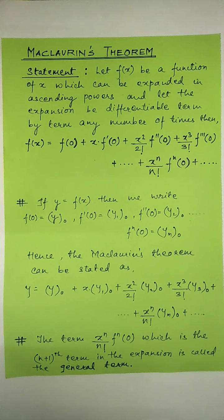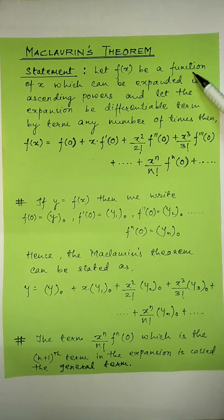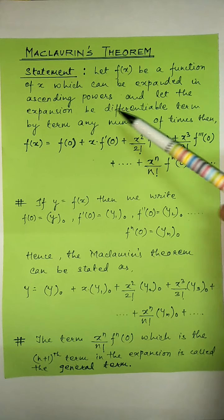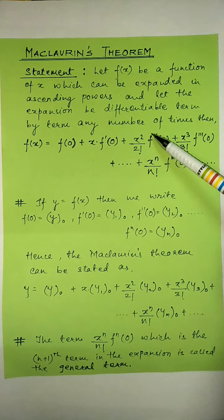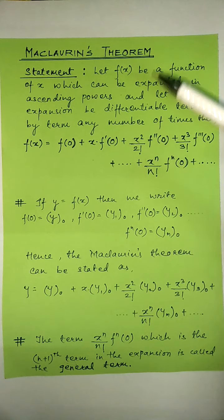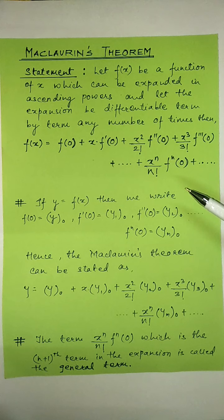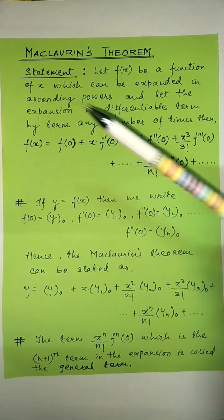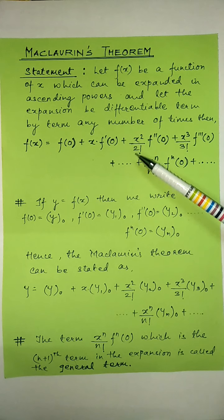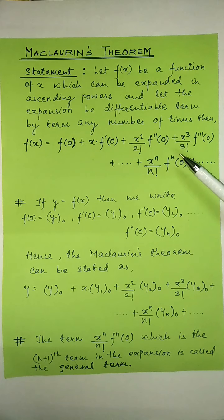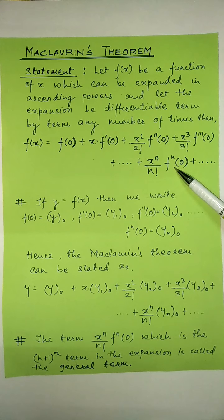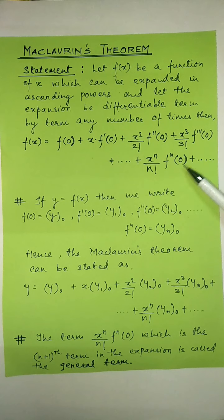The statement says: let f of x be a function of x which can be expanded in ascending powers, and let the expansion be differentiable term by term any number of times. Then the nth order derivative of f of x at x equal to 0 and so on.